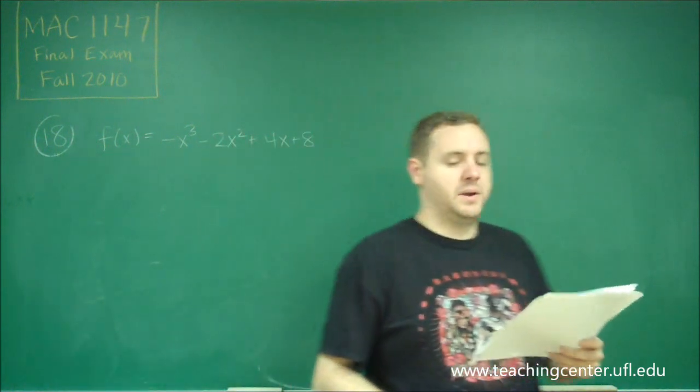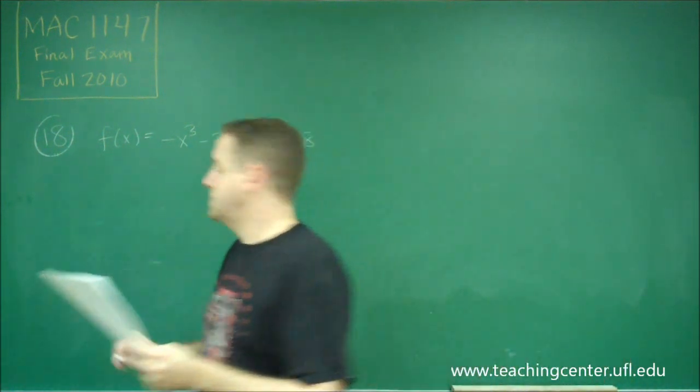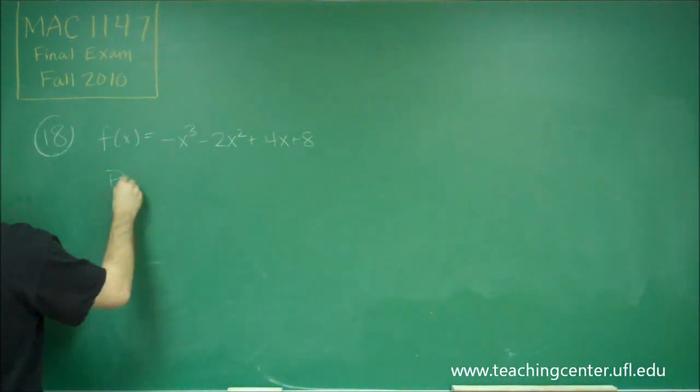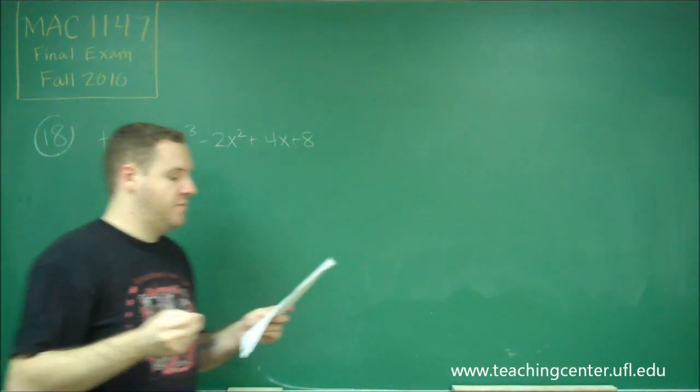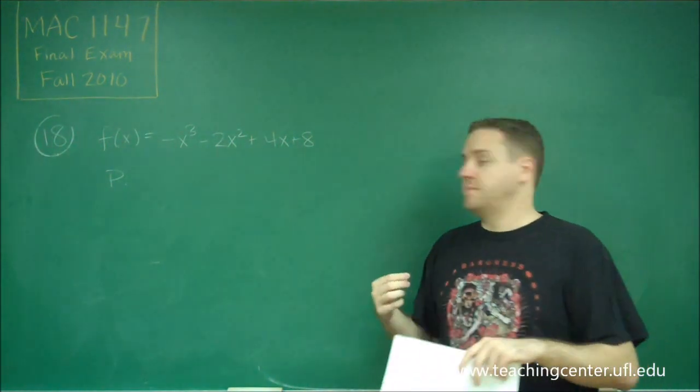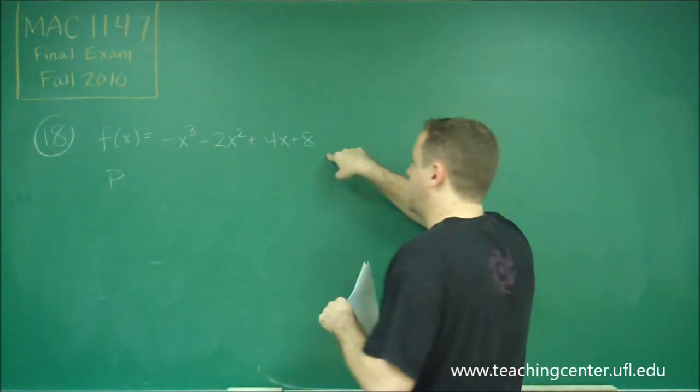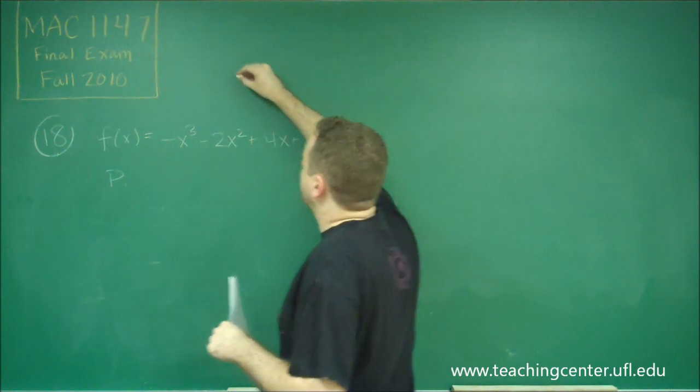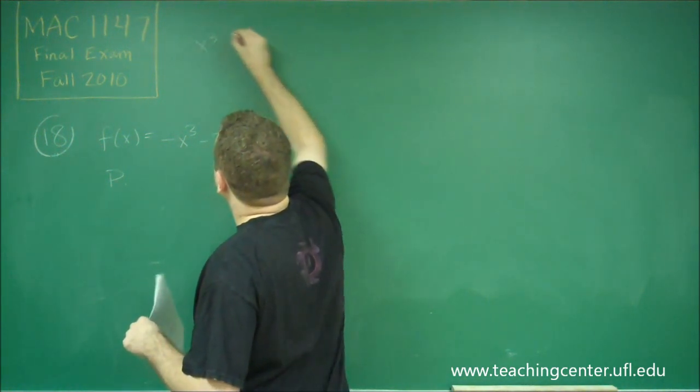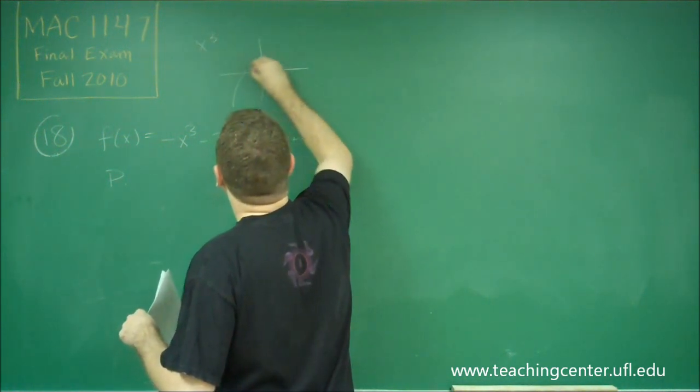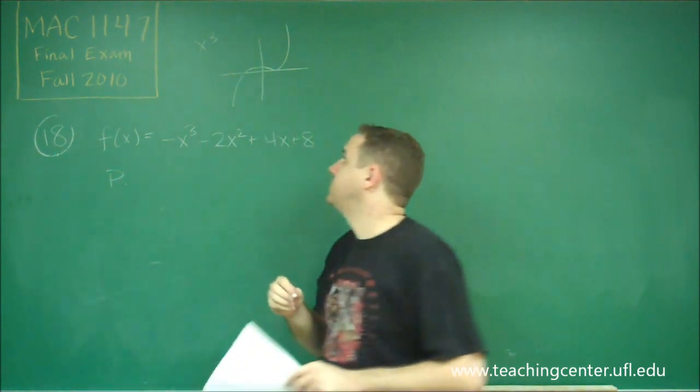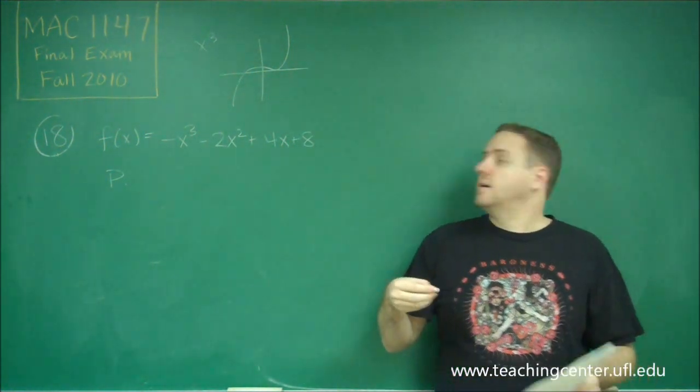We need to think about which of the following are correct. Let's take a look at P. We have the graph of f rises to the left and falls to the right. Well, we have an odd degree polynomial, so that should tell you immediately that your standard x cubed shape rises on the right and falls on the left.